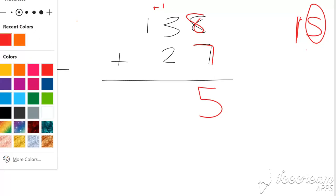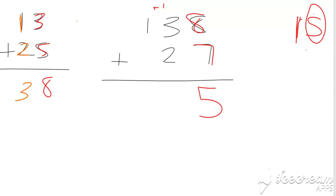Then once we've done that, we're going to move to the second column, which will be the 3 plus the 2. And once we do 3 plus 2, we get 5. But we have to remember the carryover at the top as well. So we've got 3 plus 2 plus 1, which is 6.